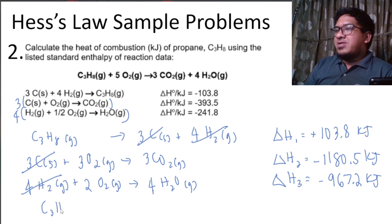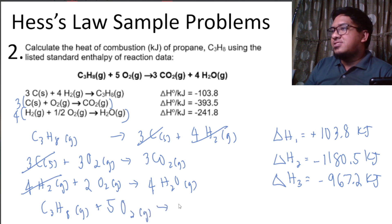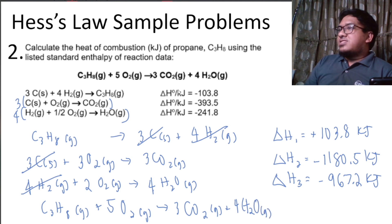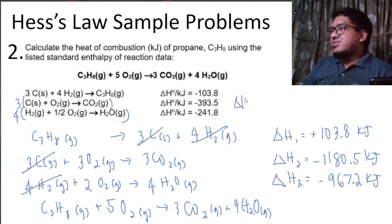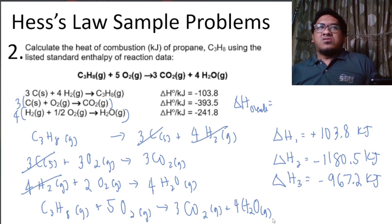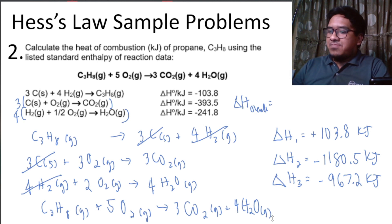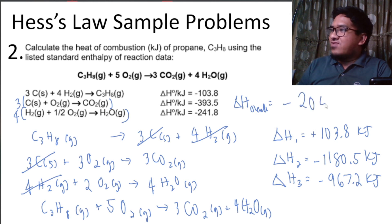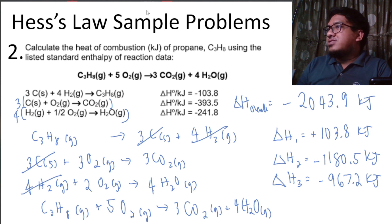After cancellation, we are left with: propane plus three plus two equals five moles of oxygen on the reactant side, yielding three moles of carbon dioxide and four moles of water vapor — matching the overall reaction. To get the overall enthalpy, we add all three: positive 103.8 plus negative 1180.5 plus negative 967.2 kilojoules, giving a total of negative 2043.9 kilojoules. That is our final answer.